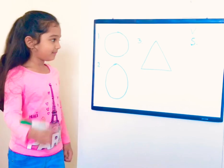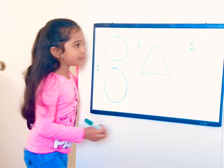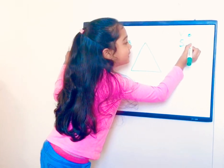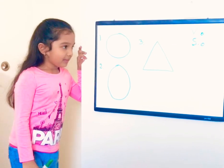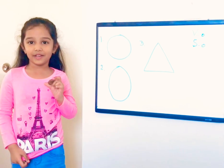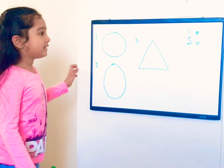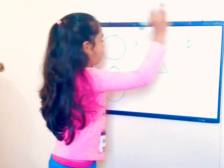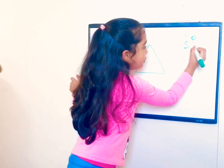First, I'm going to tell you about 2D shapes. First is circle. A circle has zero vertices and zero sides. Vertices are corners. I found a coin that looks like a circle. Next is oval. An oval has zero vertices and zero sides too.